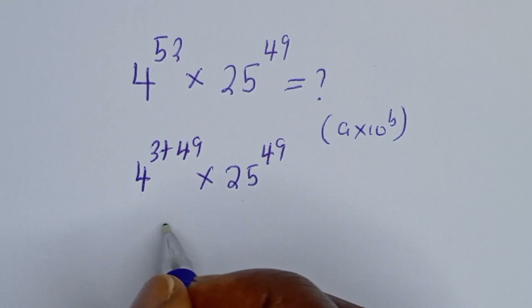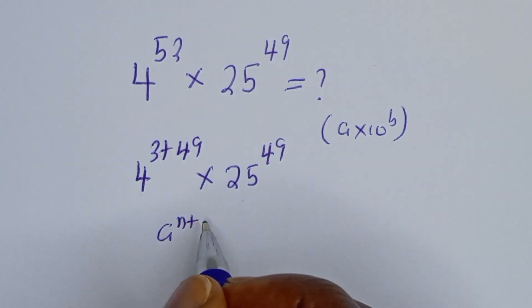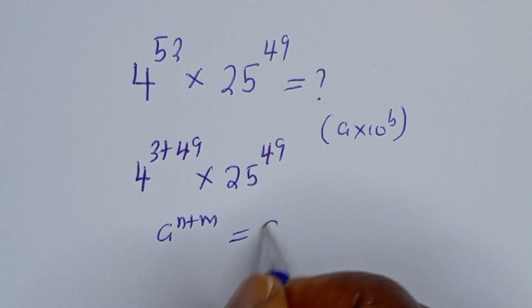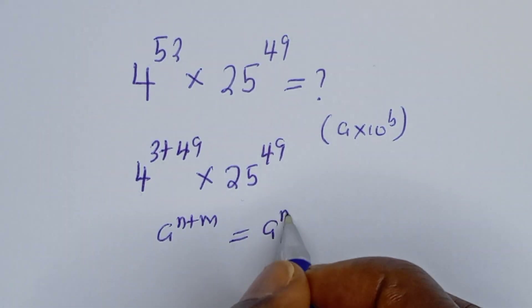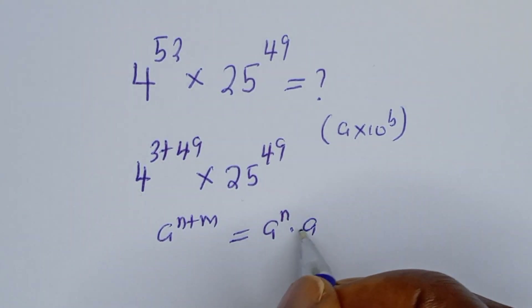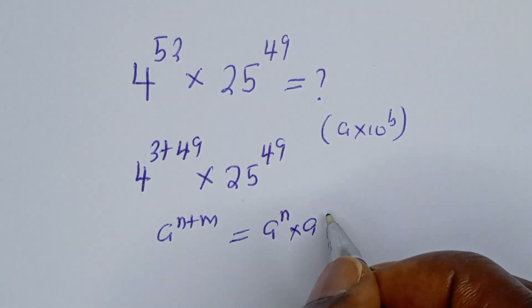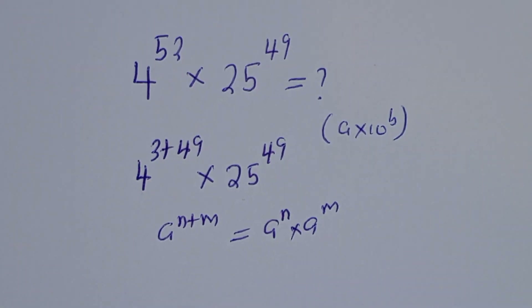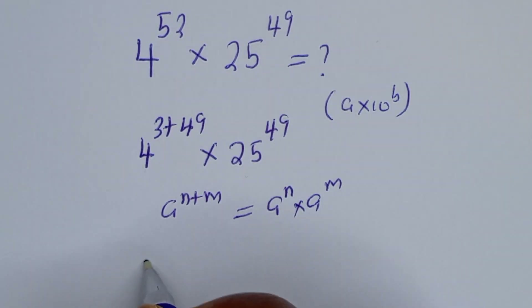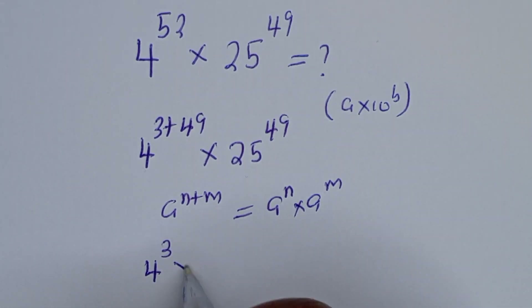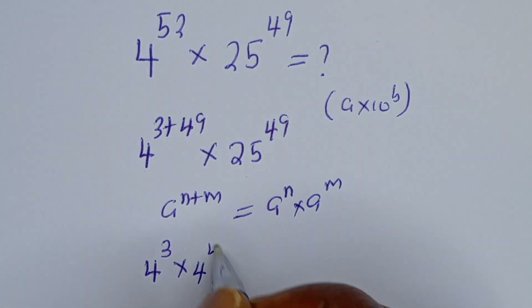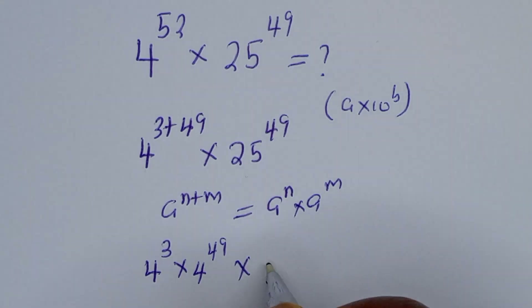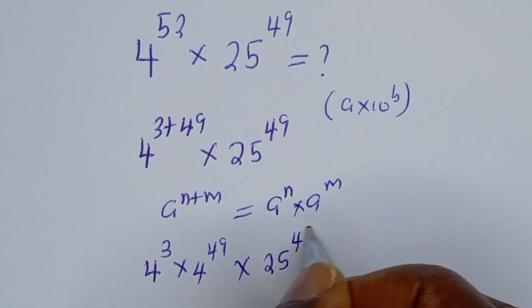Then, using the rule that A to the power of N plus M equals A to the power of N multiplied by A to the power of M, this can be written as 4 to the power of 3 multiplied by 4 to the power of 49, multiplied by 25 to the power of 49.